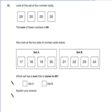Question 15. Look at this set of four number cards. The sum of these numbers is 80. Now look at the two sets of number cards below. Which set has a sum that is closer to 80?